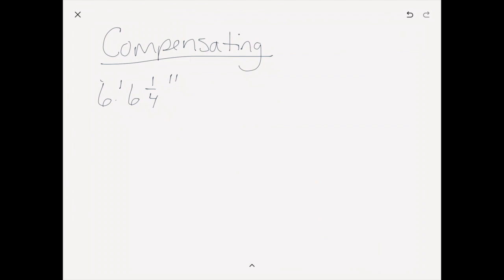With the compensating strategy, the kids start out with the original amount. But when they go to subtract two feet, ten and a half inches, a lot of kids look at that and say, man, that is really close to three feet. If it was only three feet, it would be so much easier. Well, they can subtract three feet — they'll get three feet, six and a fourth inches. But they really weren't supposed to subtract three feet, so they have to come back and compensate for what they did.